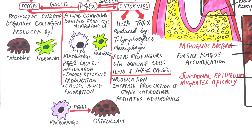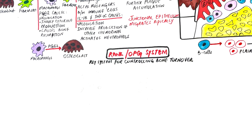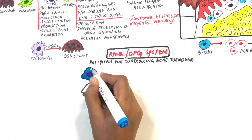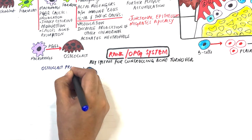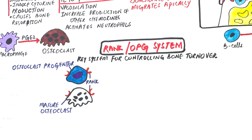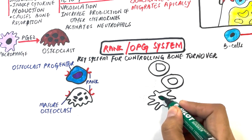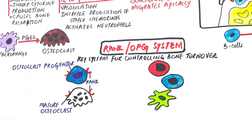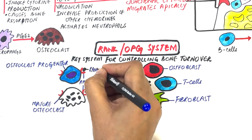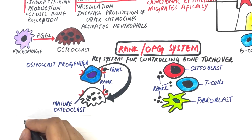Another important system worth mentioning, which is a key system for controlling bone turnover, is the receptor activator of nuclear factor and osteoprotegerin system, or the RANK and OPG system. RANK is a cell surface receptor expressed by osteoclast progenitor cells as well as by mature osteoclasts. RANK-L is a ligand that binds to RANK and is expressed by T cells, osteoblasts, and fibroblasts. The binding of RANK-L to RANK results in differentiation and activation of osteoclastic progenitor cells into mature osteoclasts, thus causing bone resorption.